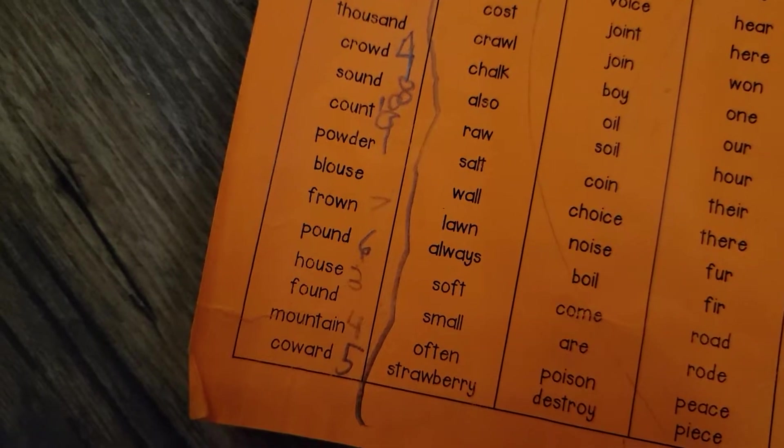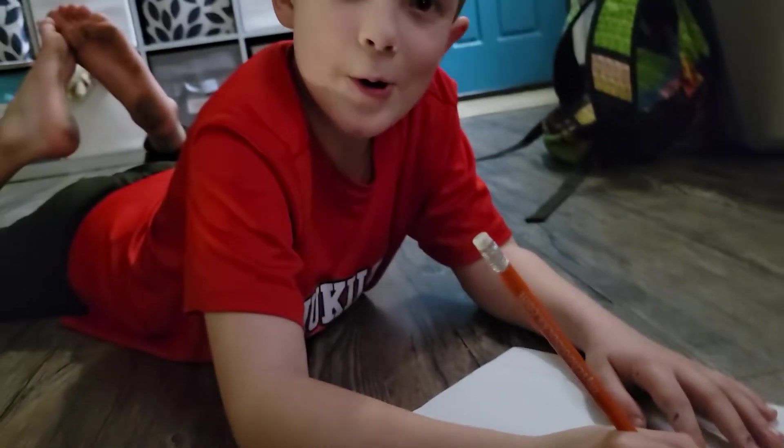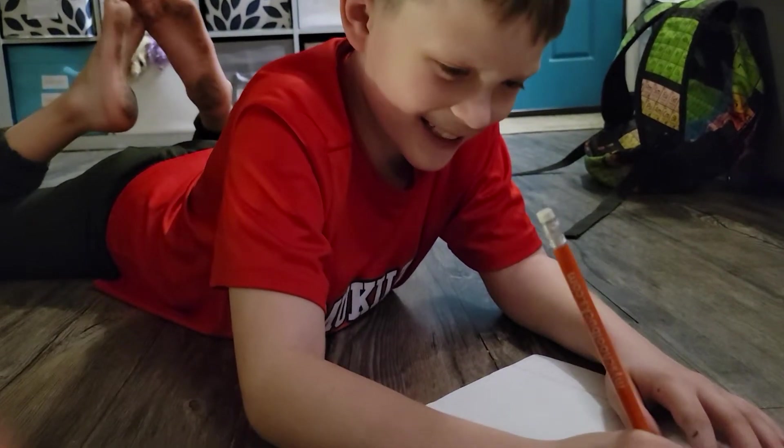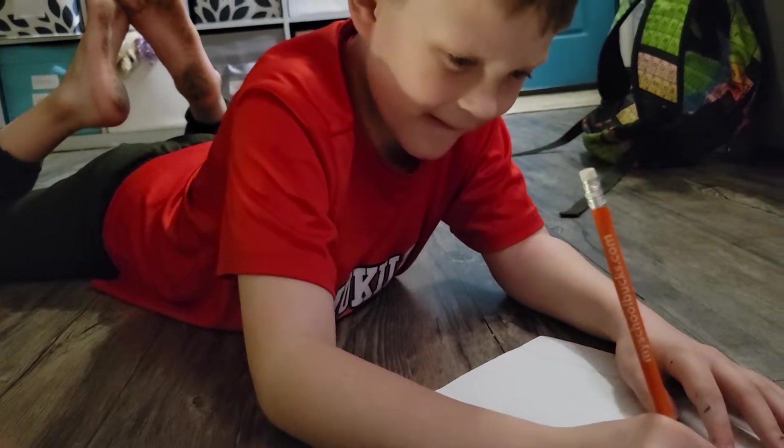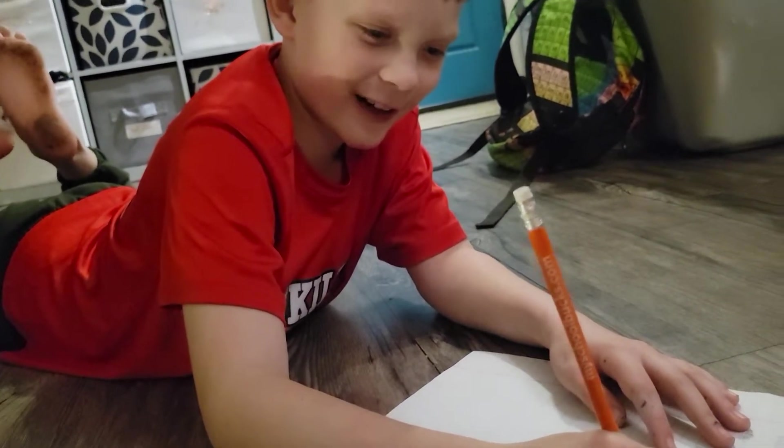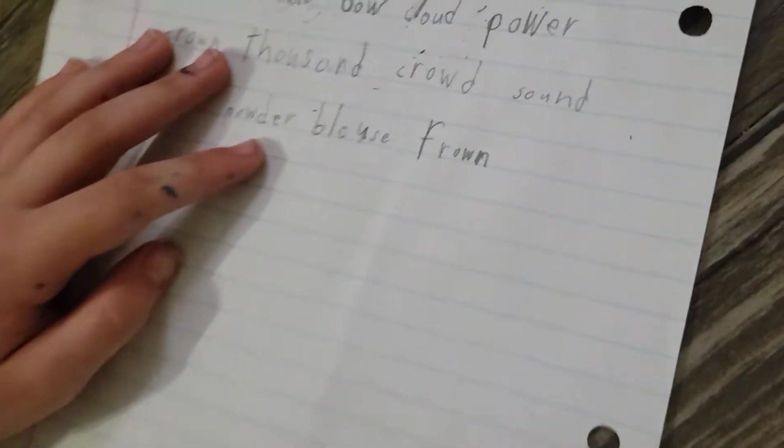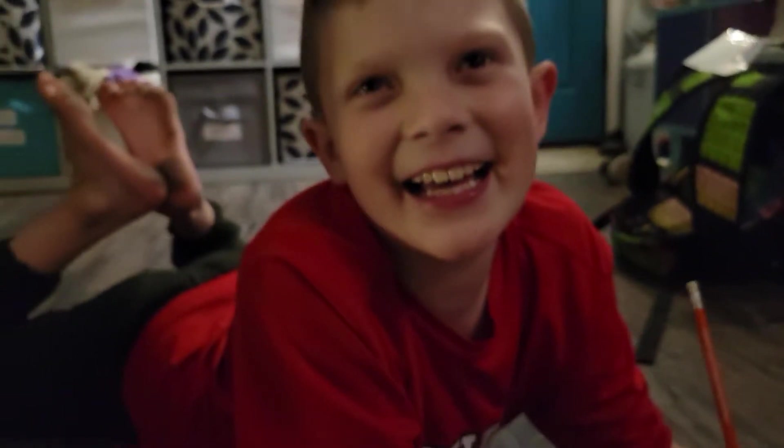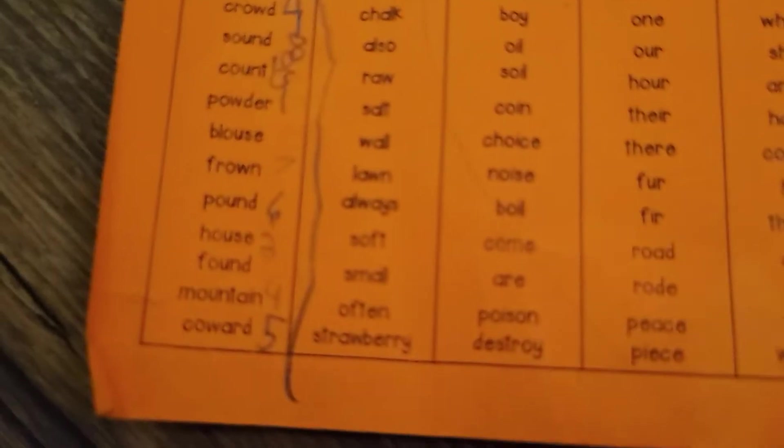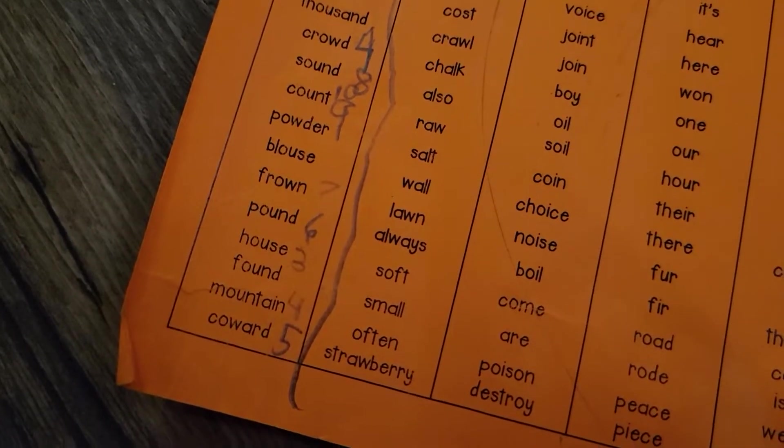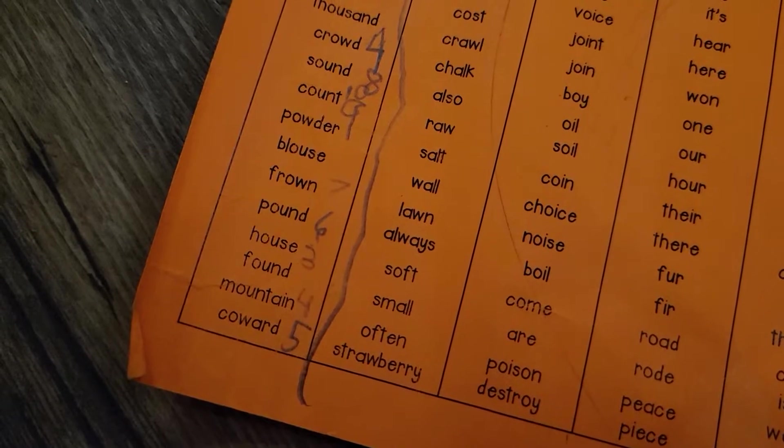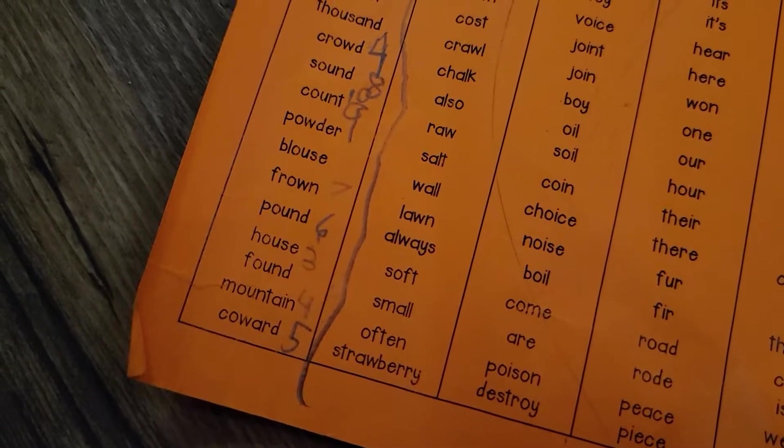So that leaves a lot. Alright, and then frown. Oh yeah, frown. Kinda hard to do a frown. That's why you have to stay happy. Turn that frown upside down. Alright, pound. Pound. So P-O-U-N-D.